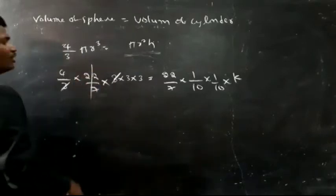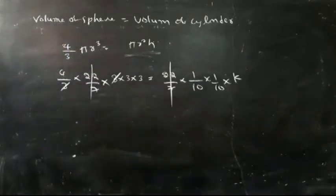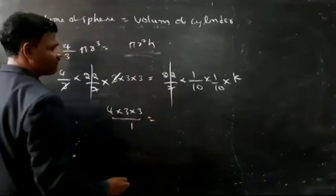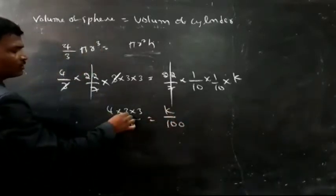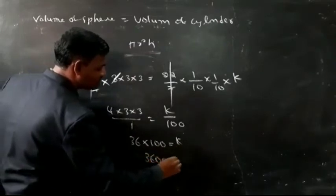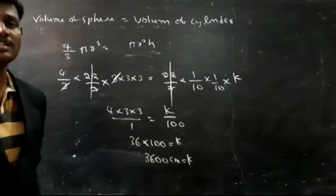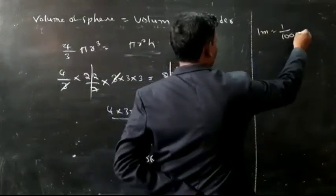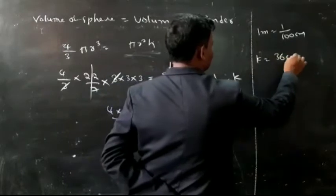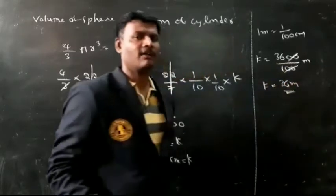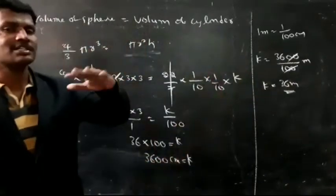After cancellation, 4 into 3 into 3 by 1 equals k by 100. So 36 into 100 equals k, giving k equals 3600 centimeters. Converting to meters: 3600 by 100 equals 36 meters. So the length of that wire is 36 meters, or 3600 centimeters.